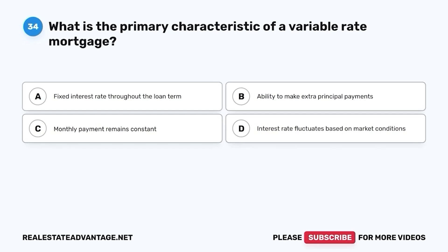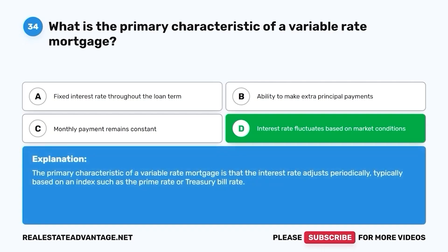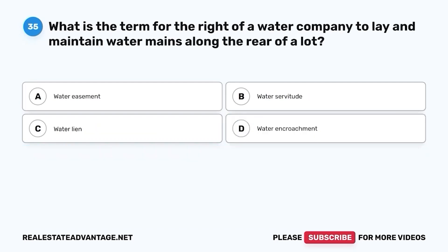Question 34. What is the primary characteristic of a variable-rate mortgage? A. Fixed interest rate throughout the loan term. B. Ability to make extra principal payments. C. Monthly payment remains constant. D. Interest rate fluctuates based on market conditions. The correct answer is D. The primary characteristic of a variable-rate mortgage is that the interest rate adjusts periodically, typically based on an index such as the prime rate or treasury bill rate.